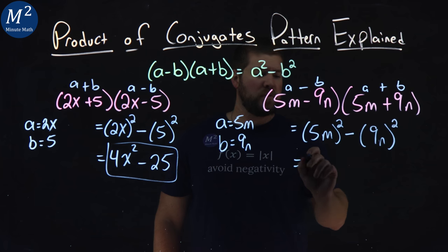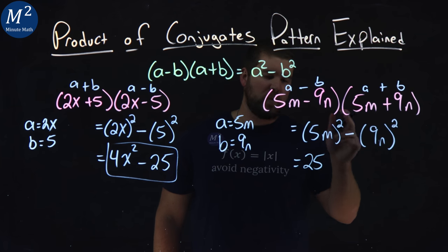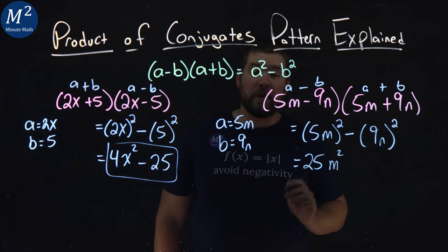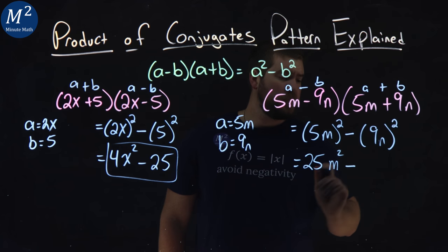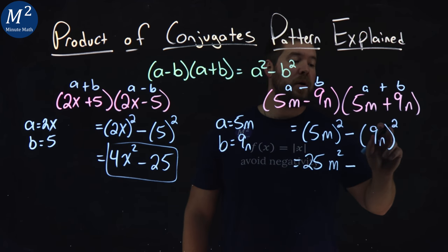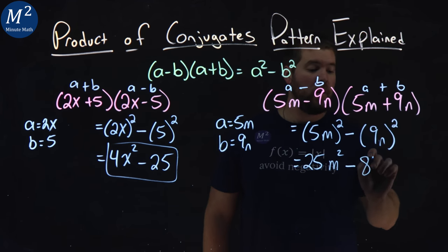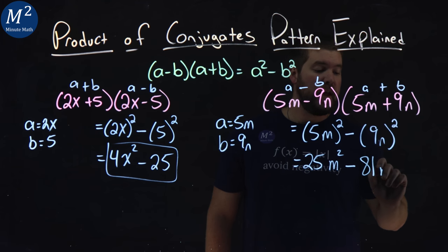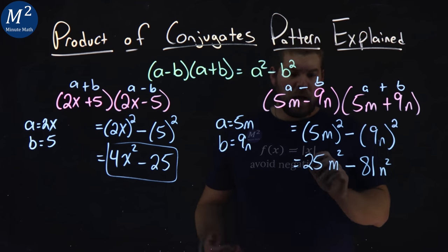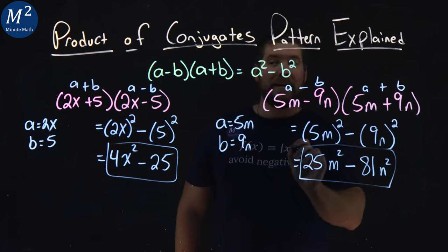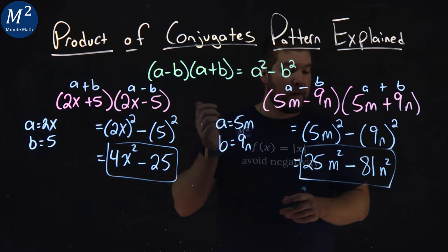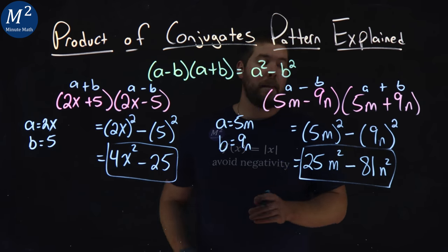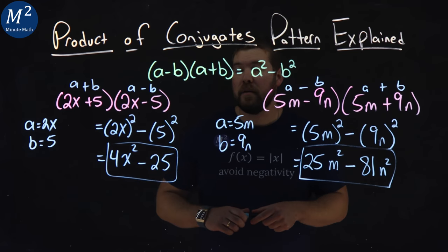5 squared is 25. M squared is m squared. From there, subtract it here: 9n all squared. 9 times 9 is 81. N squared is n squared. And there we have it. Using our product of conjugants pattern, we got an answer of 25m squared minus 81n squared.